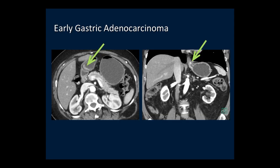Early gastric carcinomas are areas of thickening or ulceration on the gastric mucosa. Many hyper-enhance during the arterial phase of contrast enhancement. The example at the GE junction shows a small focal thickening of the mucosa that is hyper-enhancing, which was a gastric adenocarcinoma. Another image shows enhancing thickening of the mucosa at the level of the pylorus for a patient's adenocarcinoma.